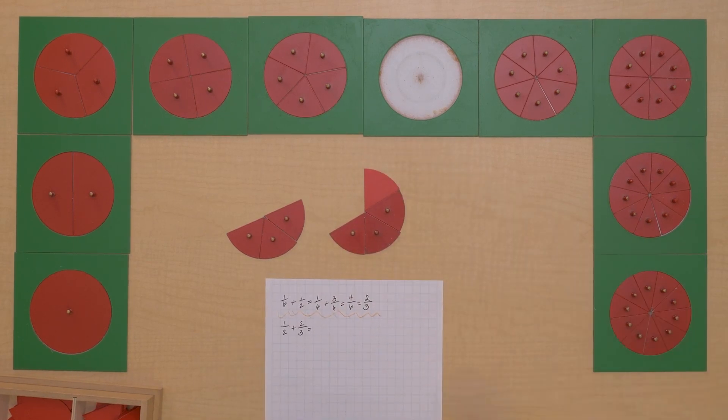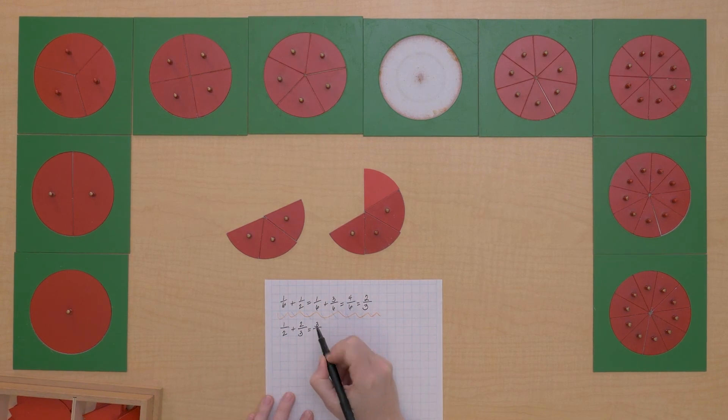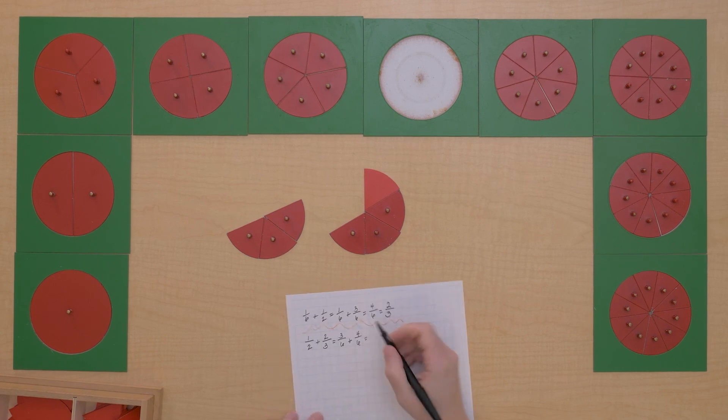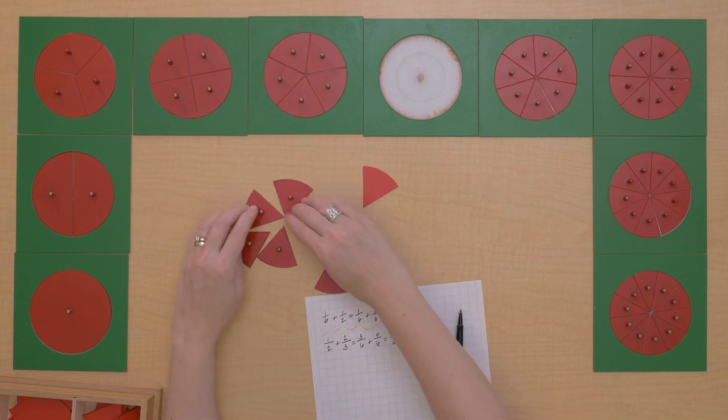Three-sixths. So now we have the one-half that we exchanged to three-sixths plus two-thirds that we turned into four-sixths, which equals seven-sixths, which is an improper fraction.